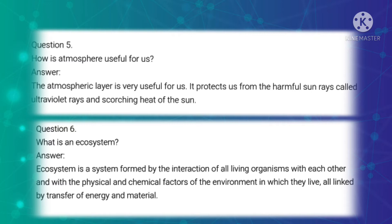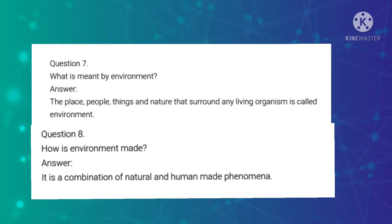The ecosystem involves interaction with the physical and chemical factors of the environment in which they live, all linked by transformed energy and materials. Seventh question: What is meant by environment? Answer: The place, people, things and nature that surround any living organism is called environment.